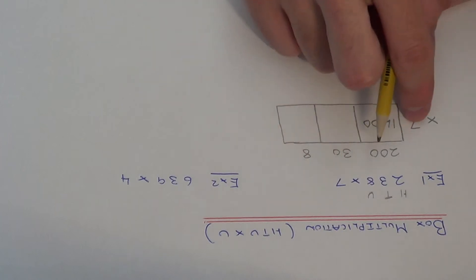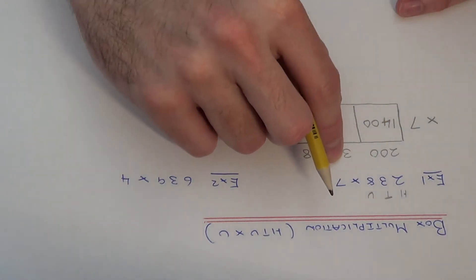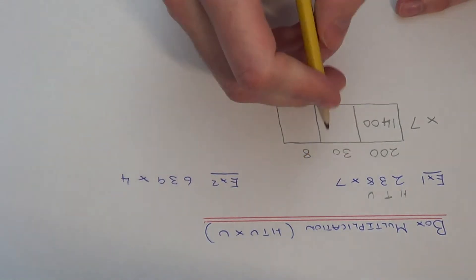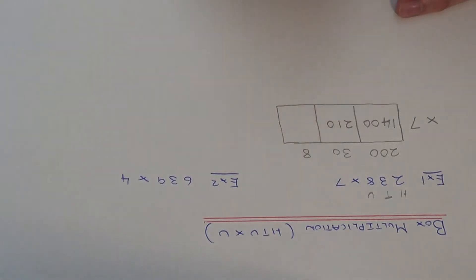In our next box we've got 30 times 7, so again to make things easier cover up the zero and just work out 3 times 7 which is 21, and I've covered up one zero so add that back on.